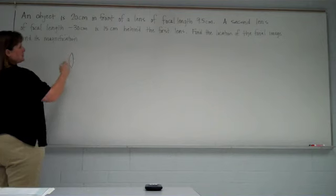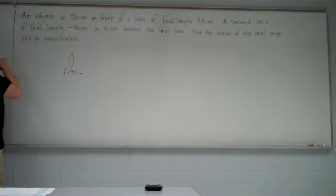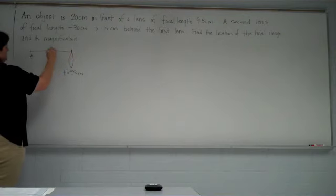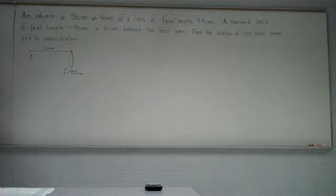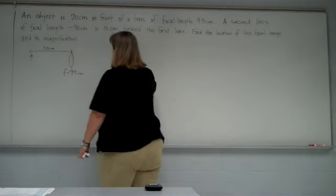So having a positive focal length means this is a converging lens. So the first lens is converging. Our object, whatever it may be, is 20 centimeters in front of this lens. So we'll call the left side the front side. Our second lens has a negative focal length so that means it's a diverging lens.